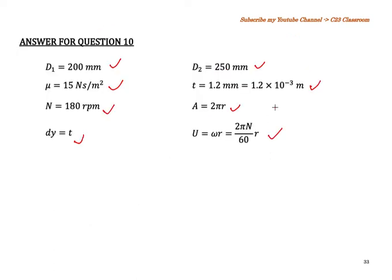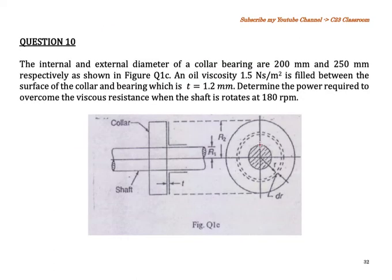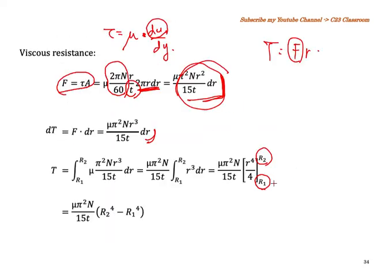r₁ is the inner radius and r₂ is the outer radius. Integrating with this limit means the limit is not from 0 to r₂ - that would be wrong. Please make sure the limit is from r₁ to r₂. Then we get this equation.